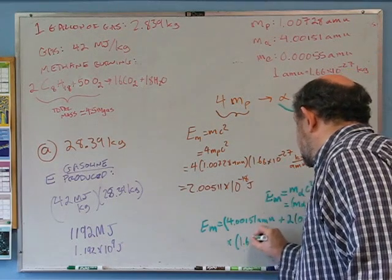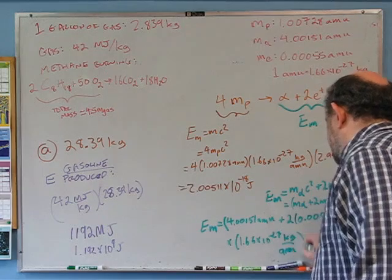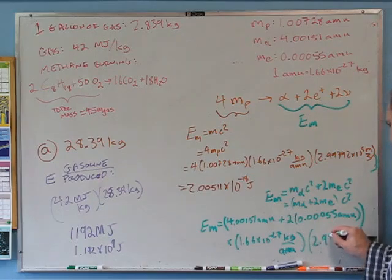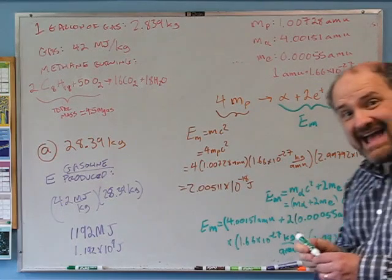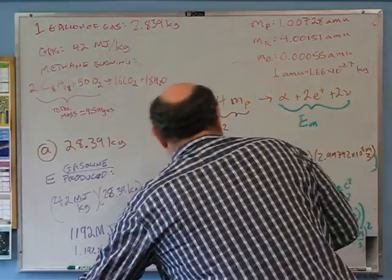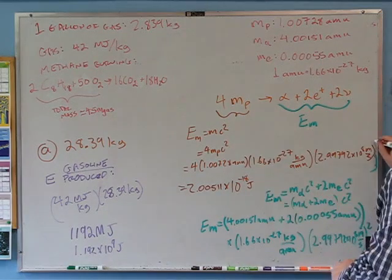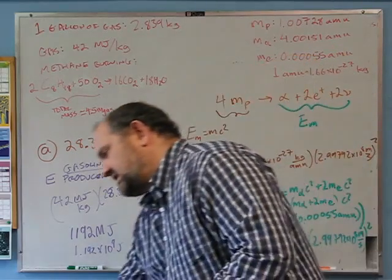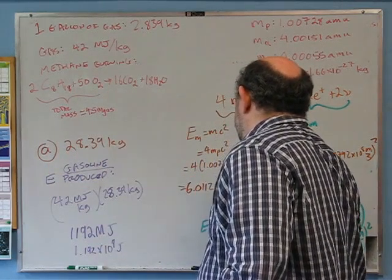Multiplying that out in kilograms and then by c² — and making sure to actually square c — gives 5.9716×10⁻¹⁰ joules for the right-side mc². The left side was 6.0112×10⁻¹⁰ joules. This right-side mass is less than the left-side mass; the difference is what we get out as energy.